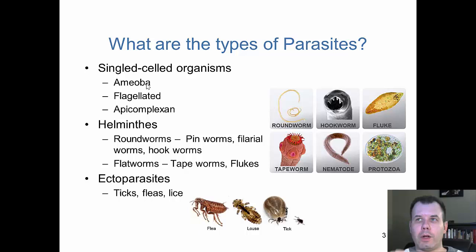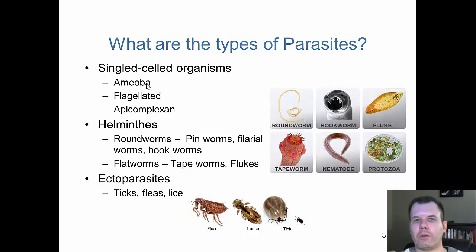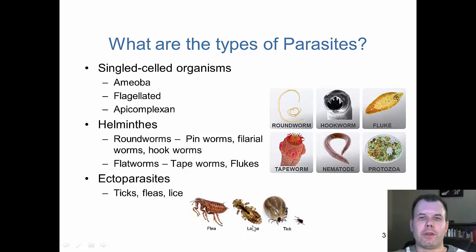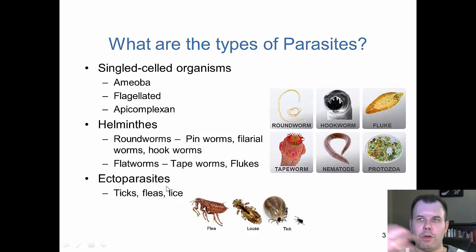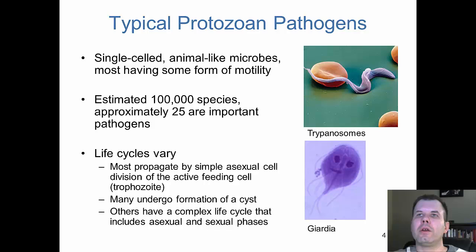The helminths are the worms. We divide them into two groups: roundworms, which look round, and flatworms, which are flattened. Flatworms include tapeworms with individual proglottids and flukes, which look like leeches but are actually flatworms. Flukes can infect many different parts of the body. The last group, ectoparasites, includes ticks — which are arachnids — and fleas and lice, which are insects.